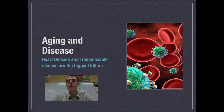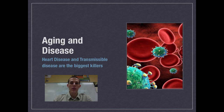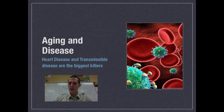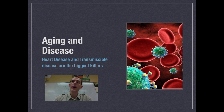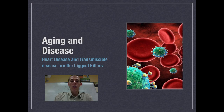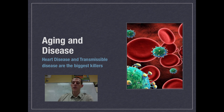Aging and disease are also going to affect population growth, generally decreasing it. The biggest killers worldwide are, first, heart disease. The second is transmissible diseases — those transmitted from one person to another — with HIV being a major one especially in sub-Saharan African countries. Waterborne and insect-borne diseases also do a lot of killing worldwide. If you live in a country where heart disease or other diseases are very common, your country is going to have a lower growth rate.